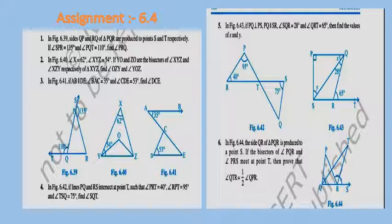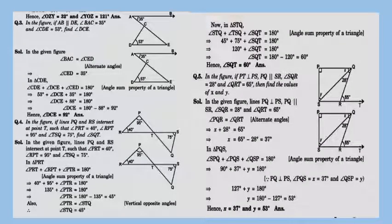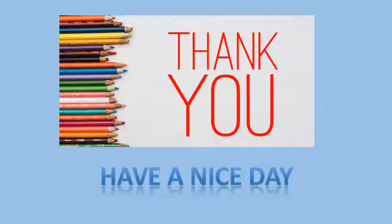So dear students, this is a small assignment for you based on the angle sum property and exterior angle property of a triangle. These types of questions were also solved in standard 7th. Here are some examples — try to solve them. Solutions are also given, so if you are unable to solve them, go through the solutions and note them down. The sixth question asks you to prove that angle QTR equals half of angle QPR. Thank you, have a nice day, bye-bye.